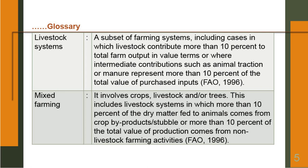This is defined by Food and Agriculture Organization 1996. Mixed Farming: it involves crops, livestock and trees — trees may be there or they may not be there, but livestock and crops are always there. This includes livestock systems in which more than 10 percent of the dry matter fed to animals comes from crop by-products, or more than 10 percent of the total value of production comes from non-livestock farming activities.